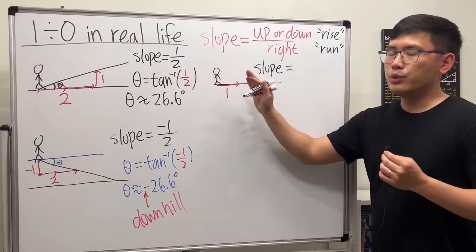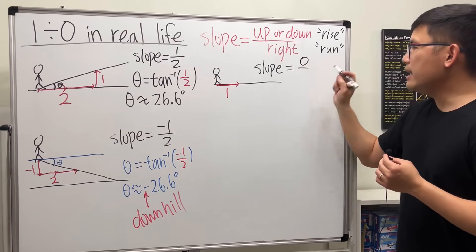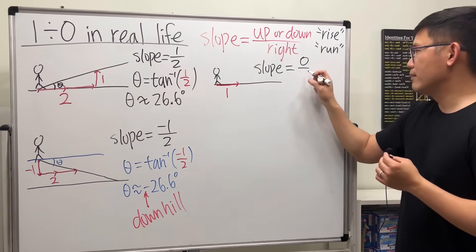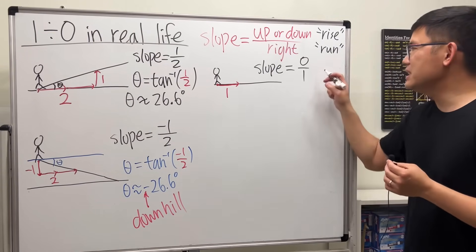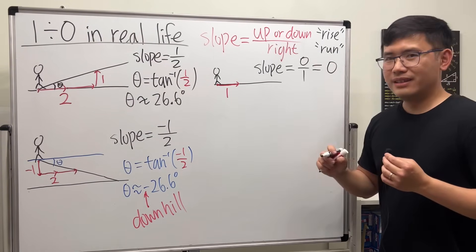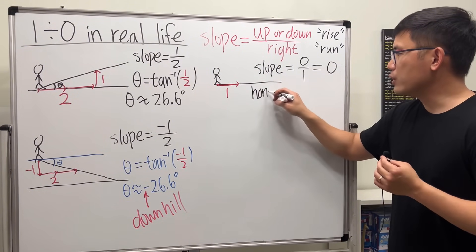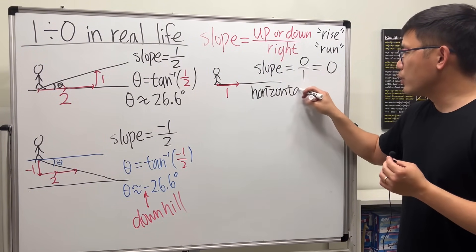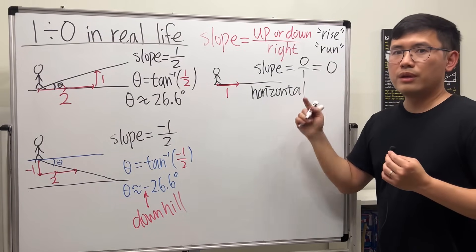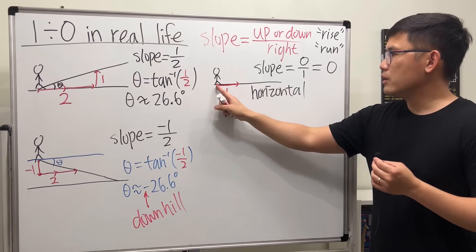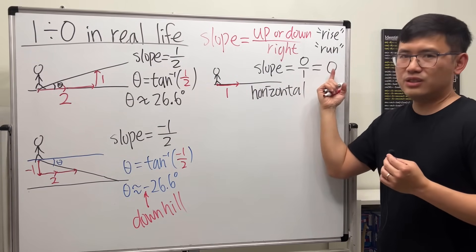Because we don't go up or down, the top number is zero and the bottom number is one. So we have zero divided by one, and the answer is zero. Whenever we have a horizontal line situation, the slope equals zero. By the way, you can also say we move to the right five times - zero divided by five is still zero.